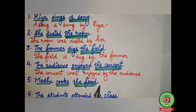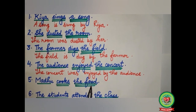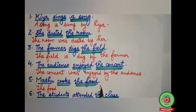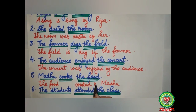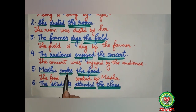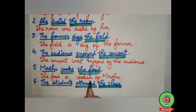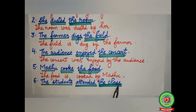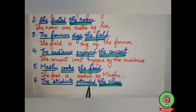Fifth sentence: 'Madhu cooks food.' Madhu — subject. 'Cooks' — verb. Food — object. Food will come in the beginning, Madhu will go to last. 'Cooks' will change into 'cooked.' Before Madhu we add 'by.' Since 'cooks' is present form, we use 'is.' Answer: 'The food is cooked by Madhu.' Sixth sentence: 'The students attended the class.' The students — subject. 'Attended' — verb. The class — object.